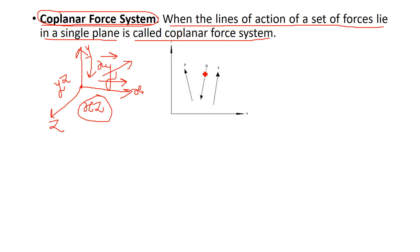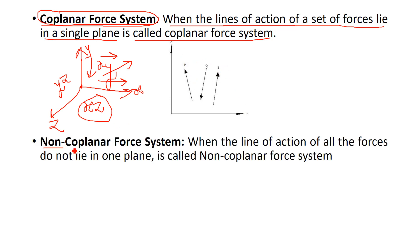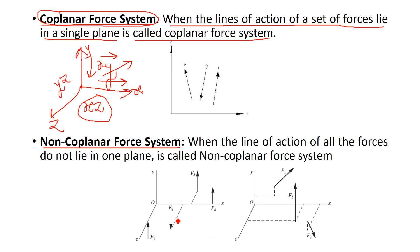For example, there is one x-y plane and three forces P, Q, S acting in one plane — that is coplanar. Non-coplanar force system is the opposite: forces do not lie in a single plane but in different planes. For example, two forces in x-z plane and two forces in x-y plane — that is called a non-coplanar force system.